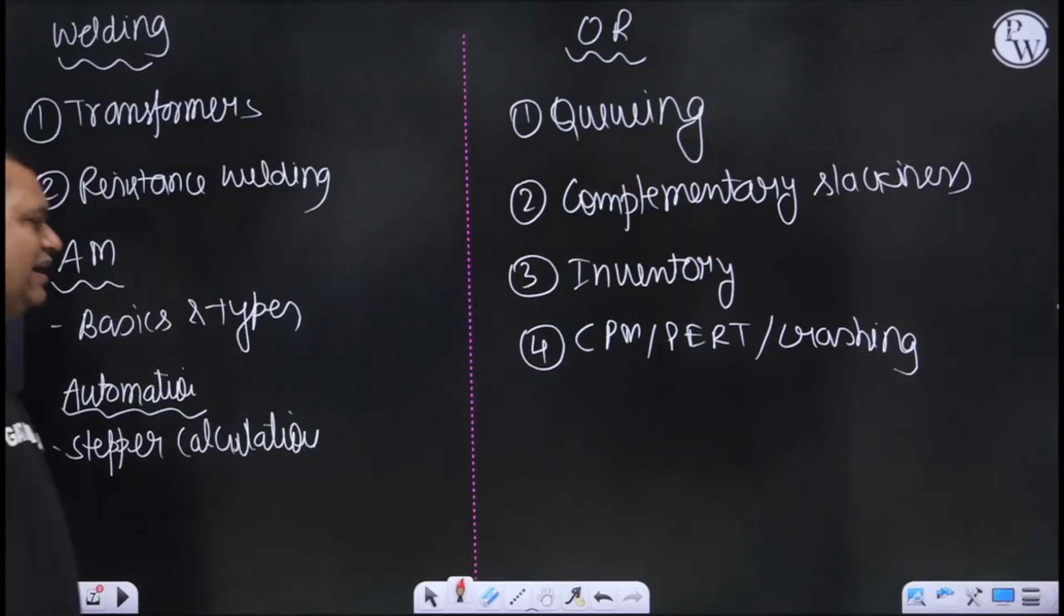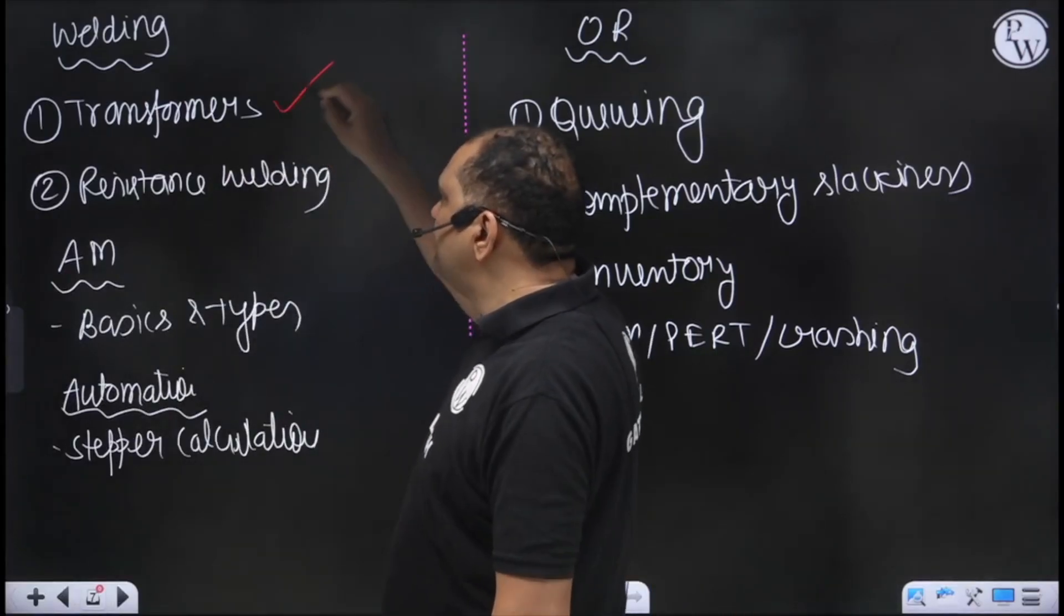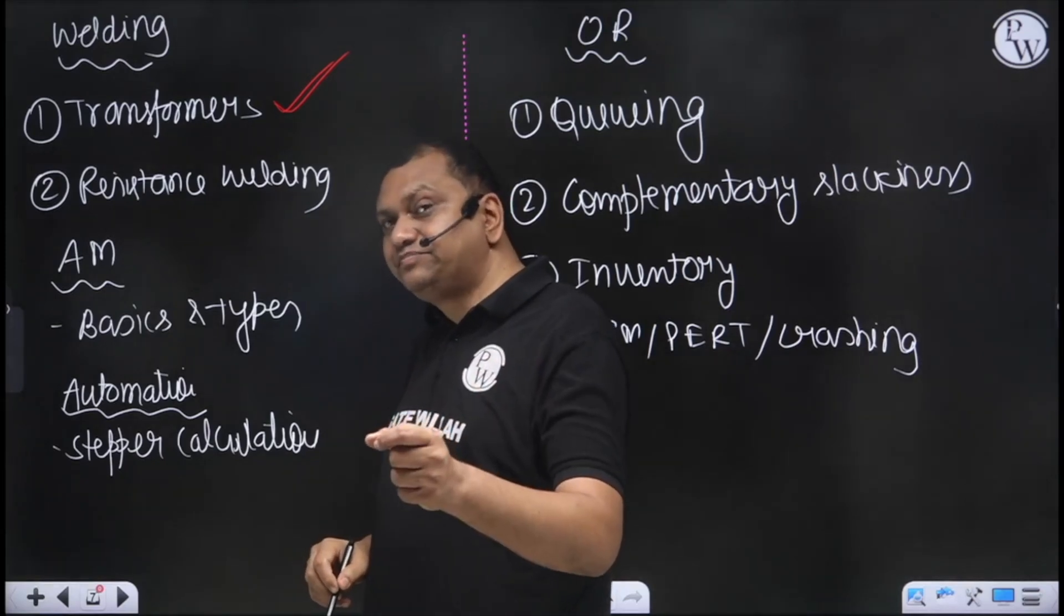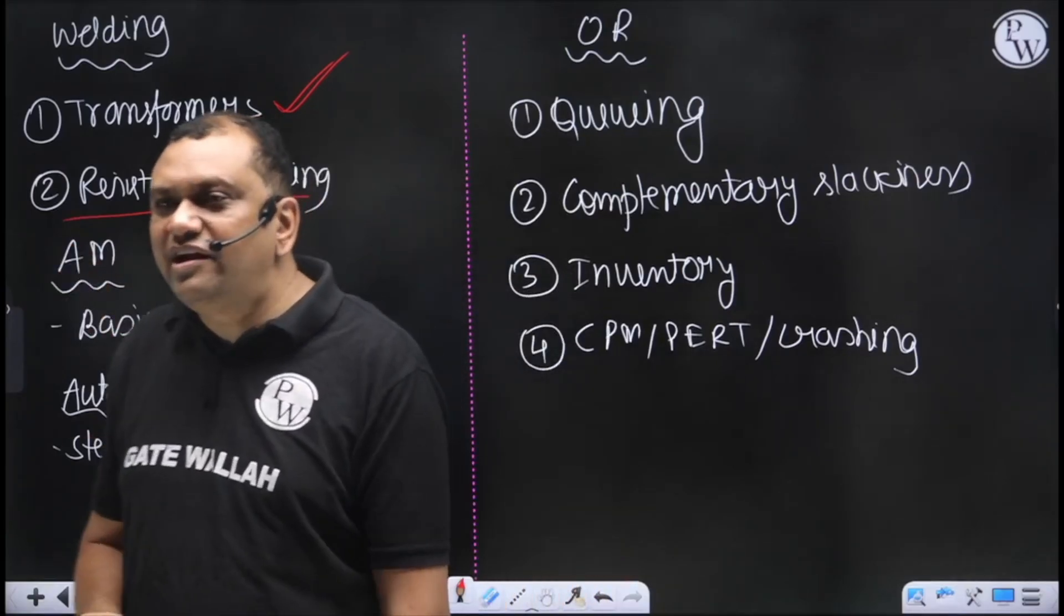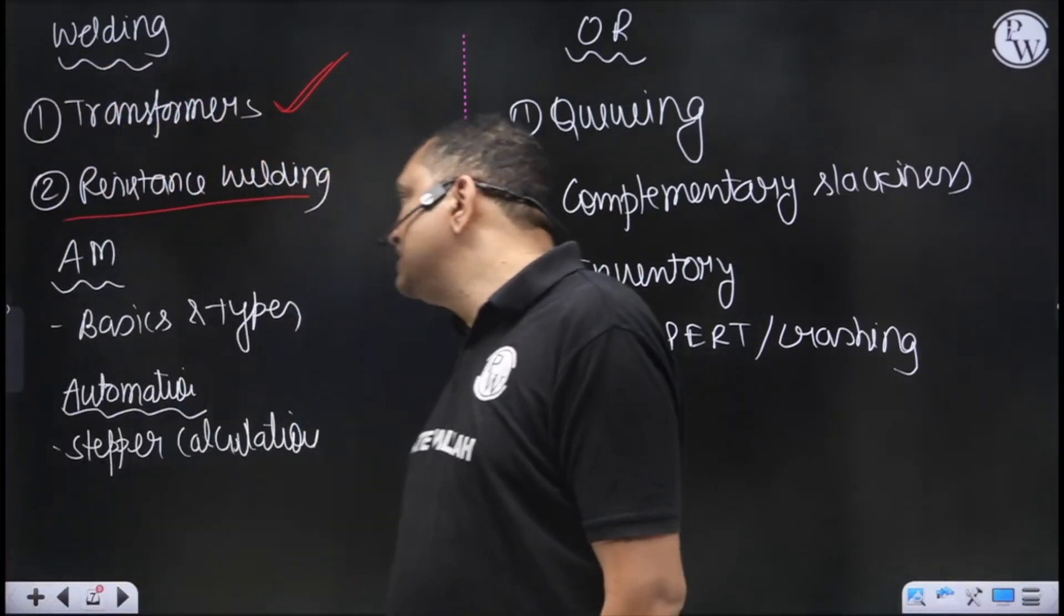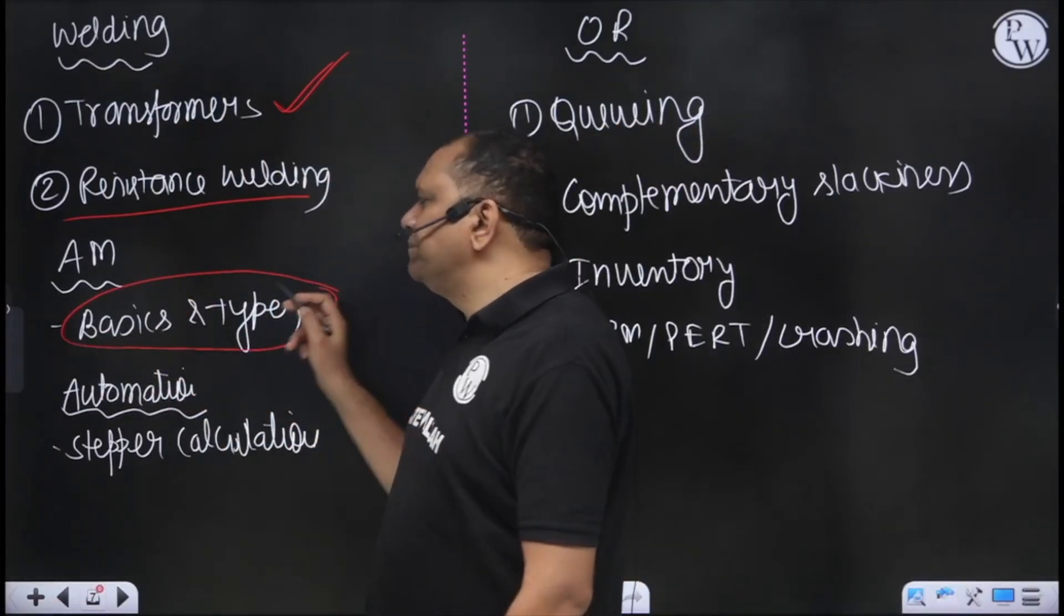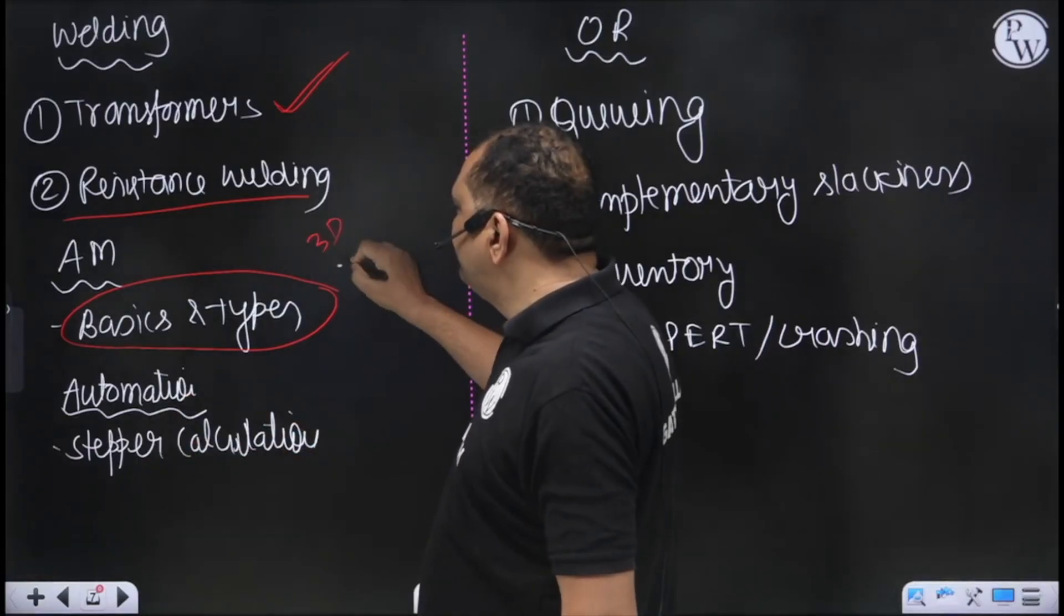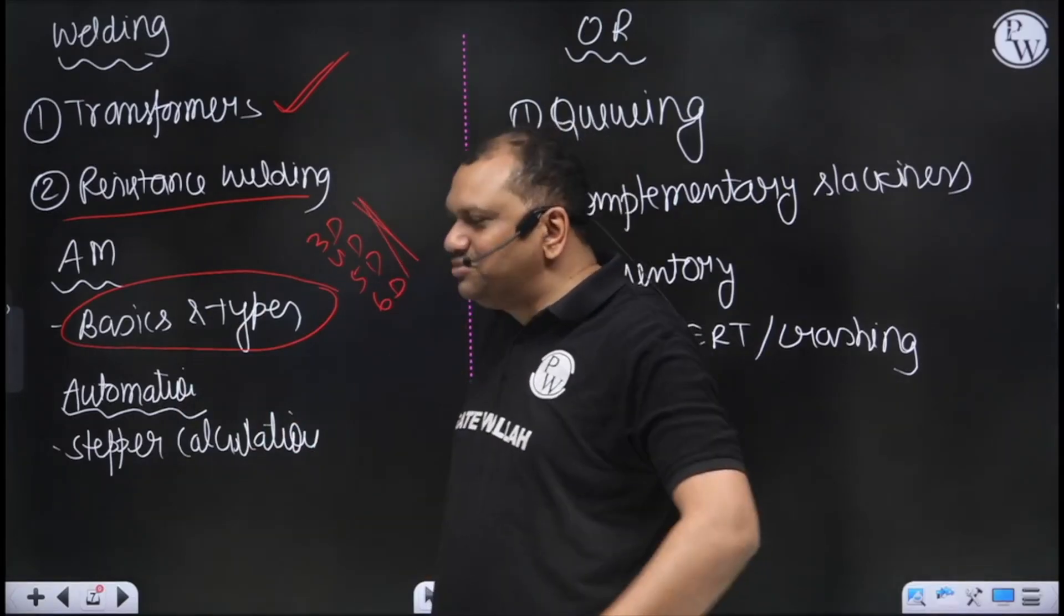From welding, this year you should focus on calculations on welding transformers - constant voltage and constant current. Simple calculations and also calculations related to resistance welding. Now additive manufacturing - you should focus on the types of additive manufacturing processes, what is 3D, 4D, 5D, and 6D. This also I have covered in today's crash course, second lecture of the crash course.